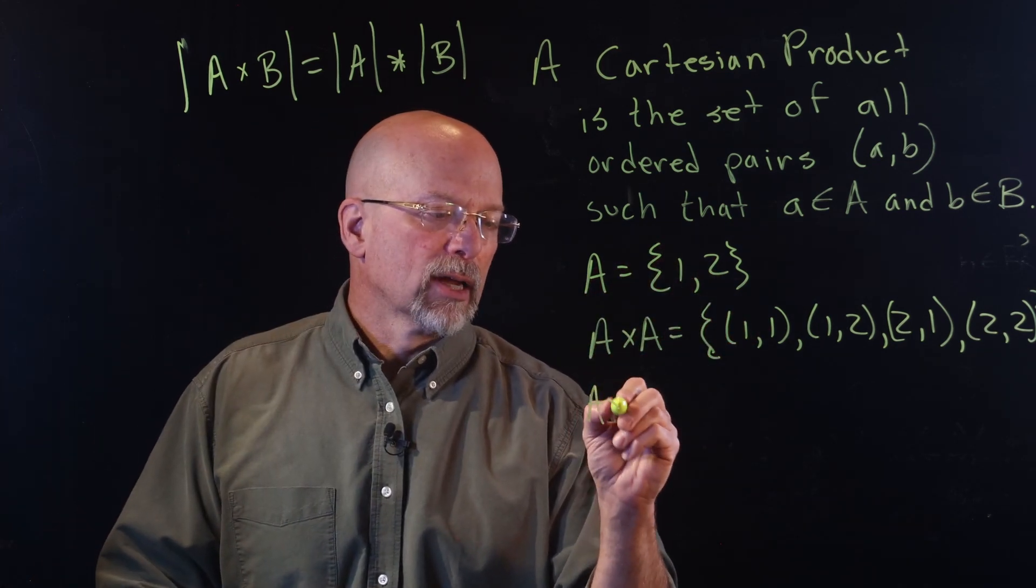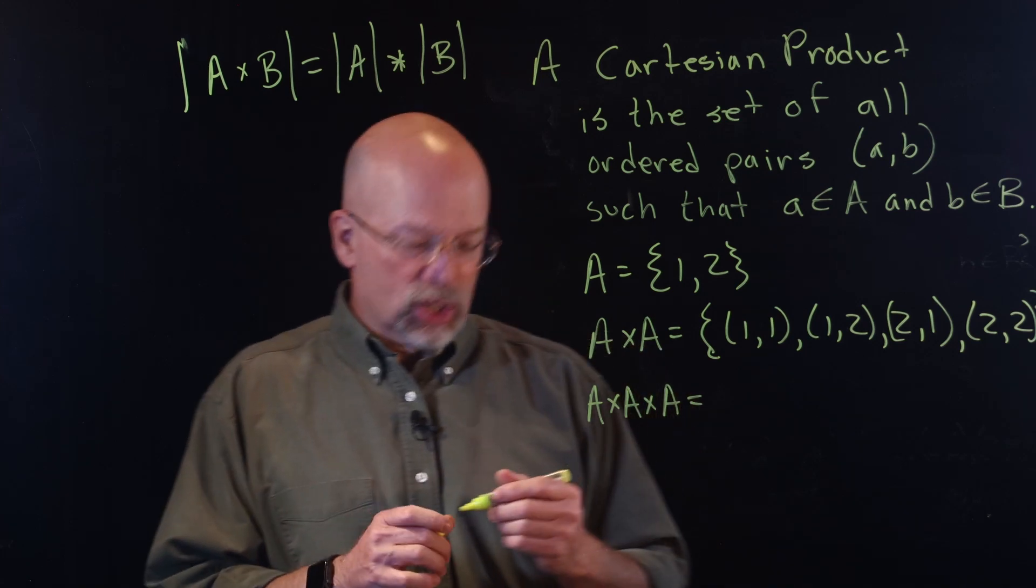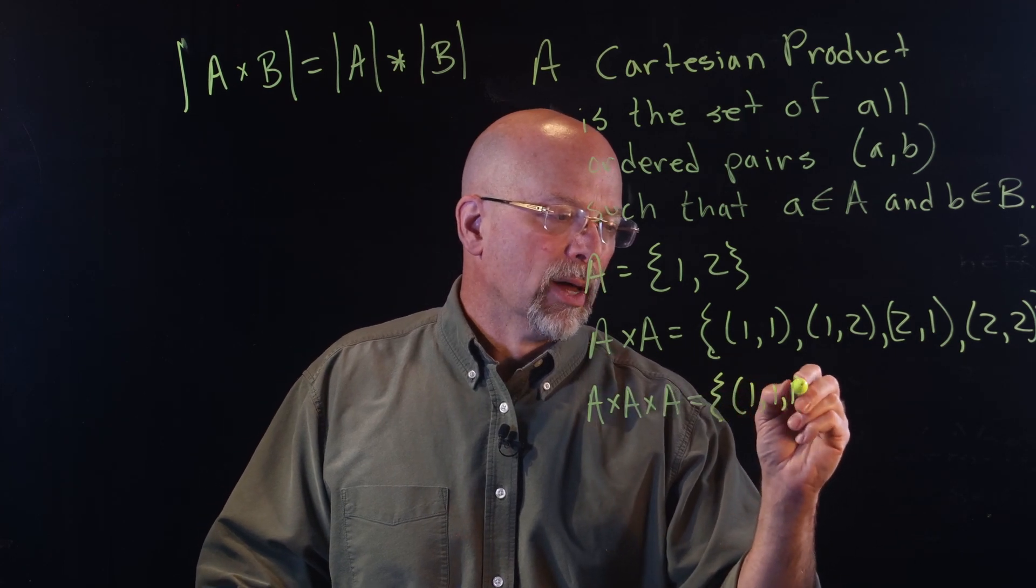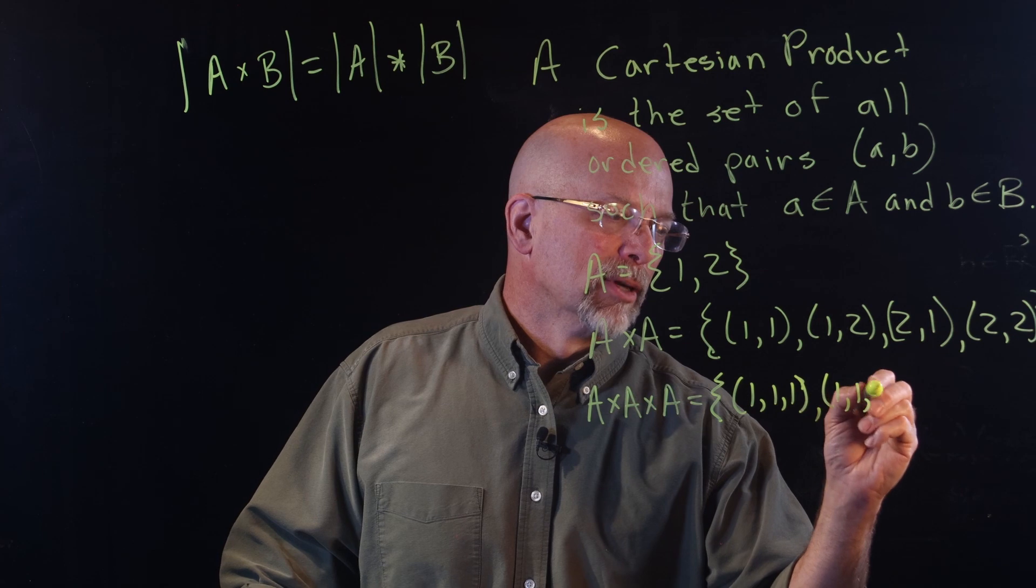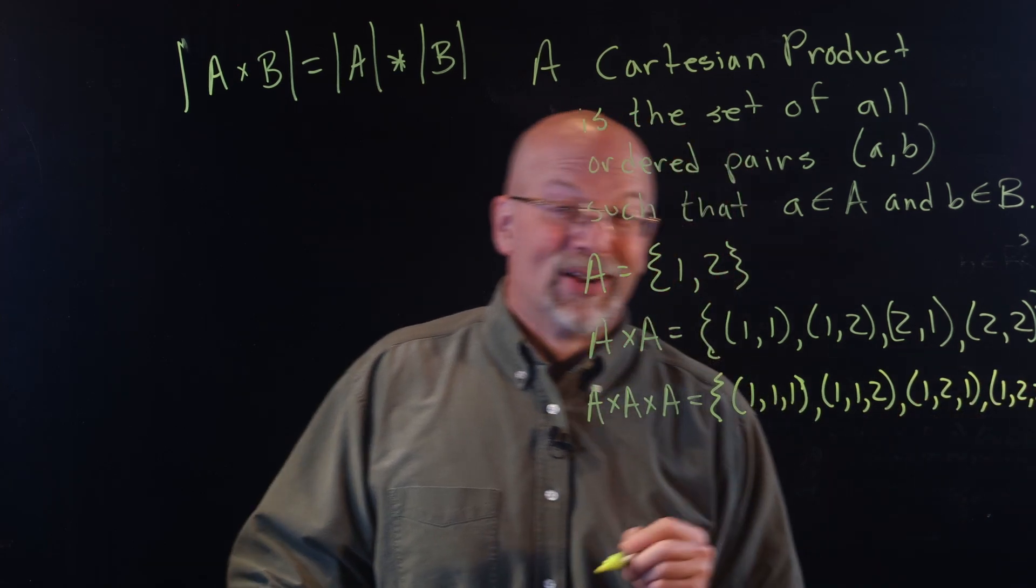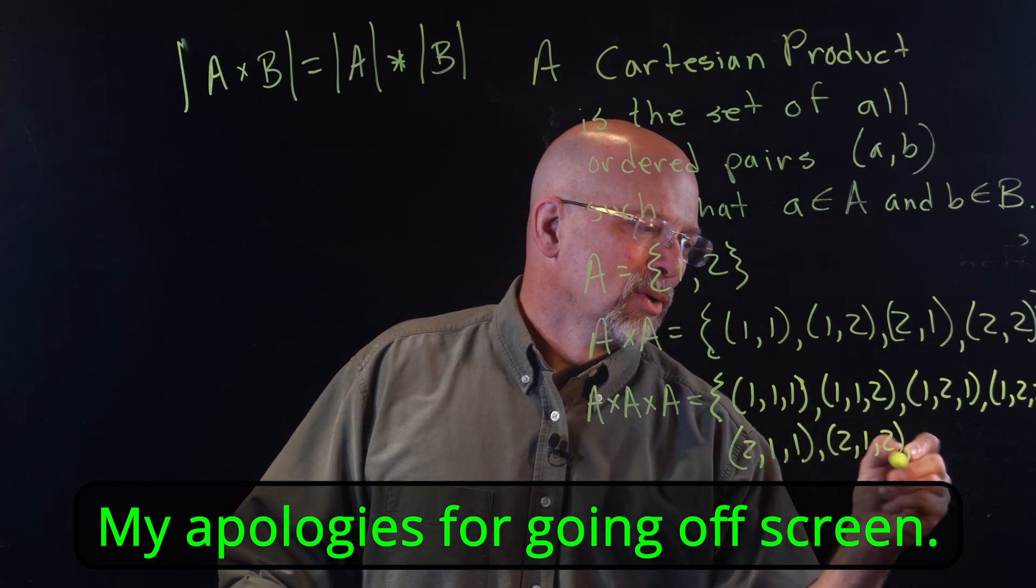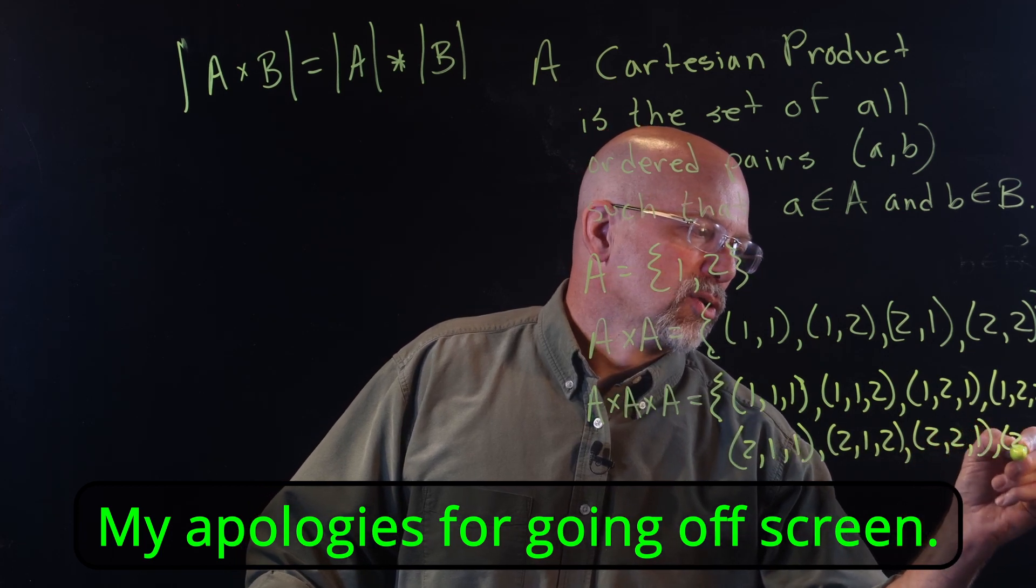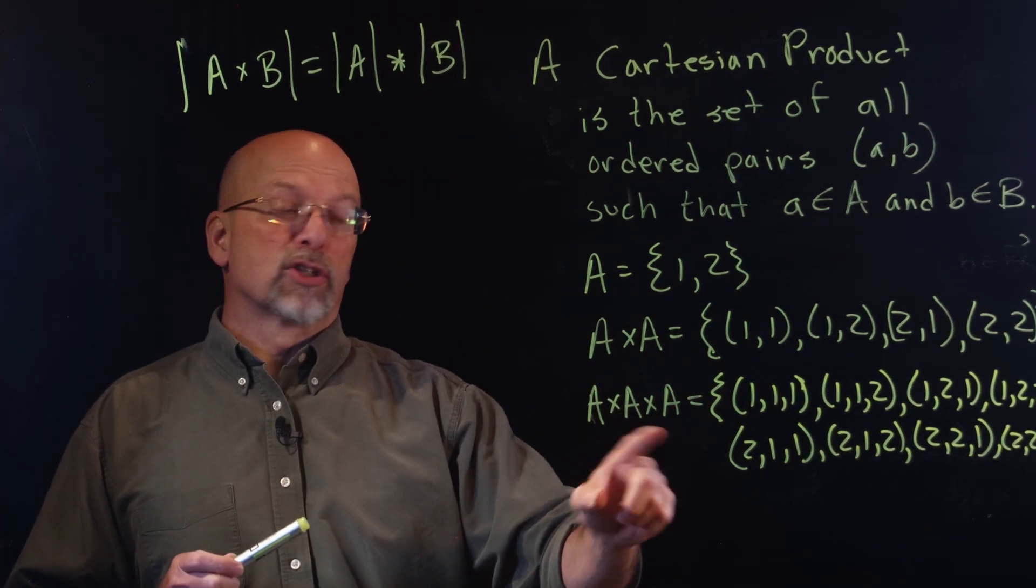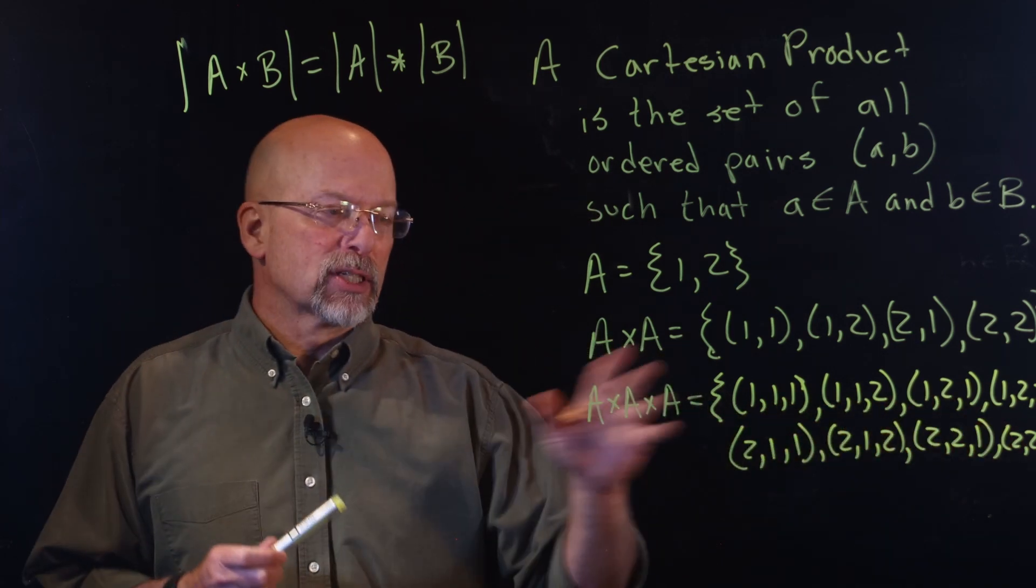We could also do A×A×A. So I could actually take multiple cross products, in which case what I'm going to get in the end for this is a three-tuple. And I get (1, 1, 1), and then (1, 1, 2), and then (1, 2, 1), and then (1, 2, 2). And then (2, 1, 1), (2, 1, 2), (2, 2, 1), and (2, 2, 2). Now what's the cardinality of this set? Two times two times two, the cardinality of A being 2. So it's 2×2×2. That should give us eight, eight elements in that cross product.